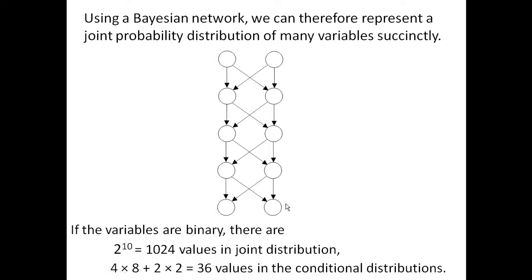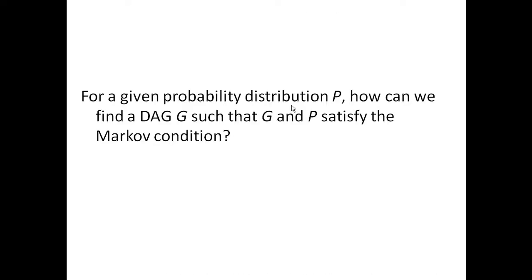Bayesian networks can contain hundreds or even thousands of nodes and the number of values in the joint probability distribution can be in the billions. But if each variable does not have too many parents, we can represent those distributions pretty succinctly.